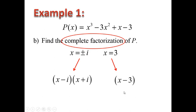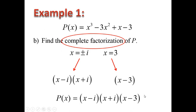For those wondering, what's the difference between the factor form and the complete factorization form? The complete factorization form requires rewriting everything with real numbers and complex zeros. The factor form is just factoring with either a linear binomial or a quadratic binomial. So here it is — P of x equals x minus i, times x plus i, times x minus 3.